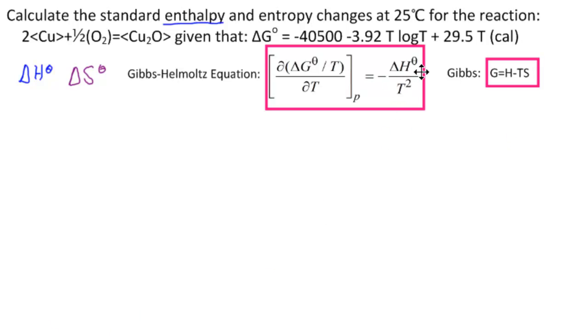So delta H theta is going to be minus T squared times this. We need to find this here. So first we need to divide delta G theta by T. Delta G theta divided by T would be minus 40,500 divided by T minus 3.92 log T, this T is canceled, plus 29.5, that T is canceled. Now we need to take the partial with that with respect to T, considering the pressure to be fixed.